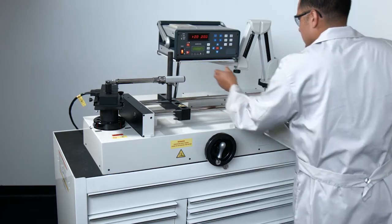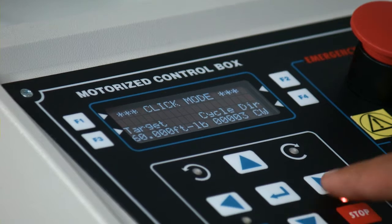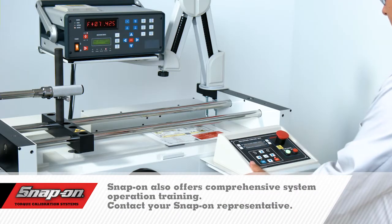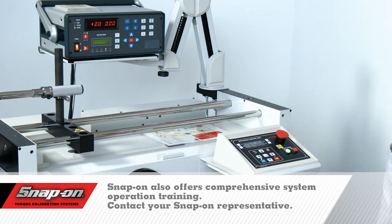Snap-On calibration systems are sophisticated, yet easy to operate. Snap-On also offers complete training on the operation of the systems, including repair and calibration of your torque wrenches.